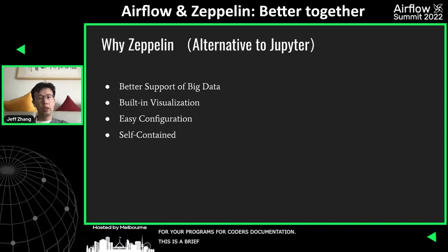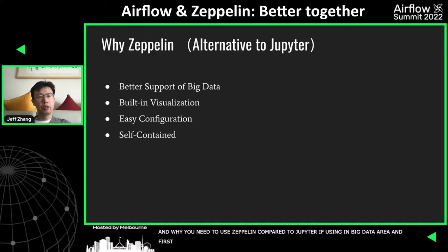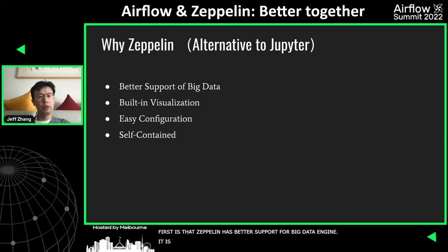Here's a brief comparison between Zeppelin and Jupyter. There are four reasons why you should use Zeppelin compared to Jupyter if you are working in the big data area. The first reason is that Zeppelin has better support for big data engines. It's very easy to run a Spark job in Zeppelin with very few configurations.